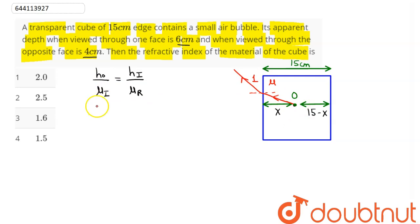let's say x, we can say here x is our actual depth divided by refractive index of incident ray which is mu is equal to height of image which is